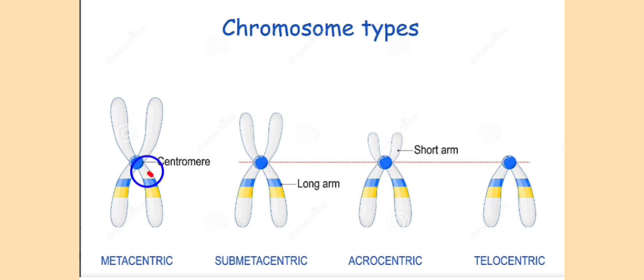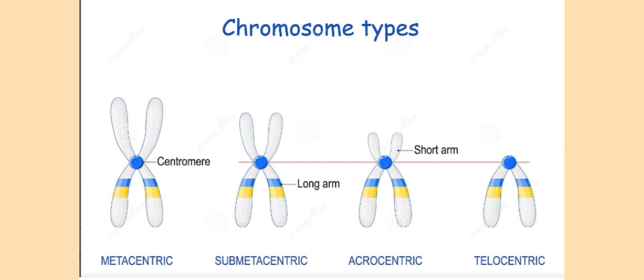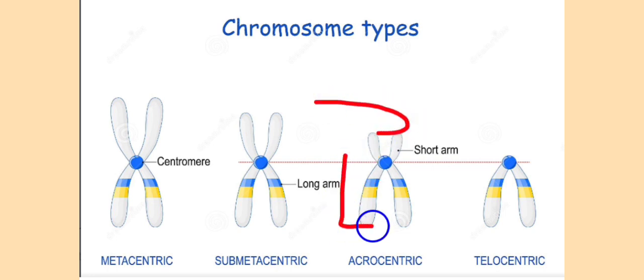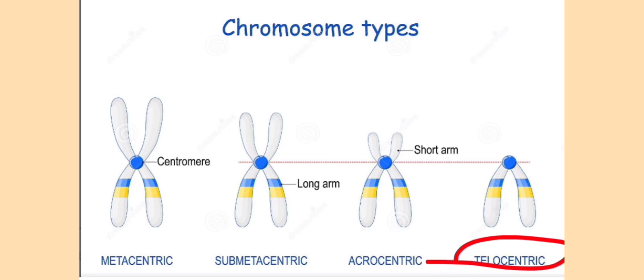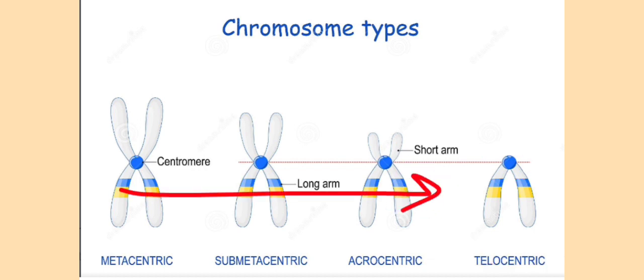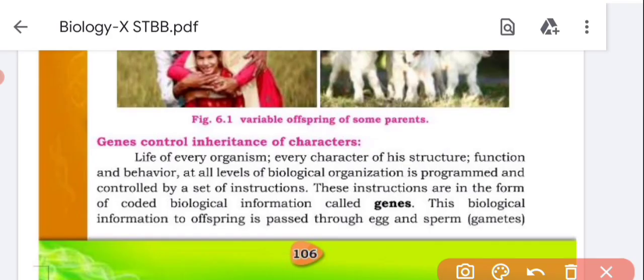Chromosomes can be classified into types based on centromere position. When the centromere is located at the center producing two equal arms, the chromosome is called metacentric. When the arms are unequal — one arm very short and one very long — we call it a J-shaped or L-shaped chromosome, also known as acrocentric. Next is telocentric, where the centromere is located at the tip.